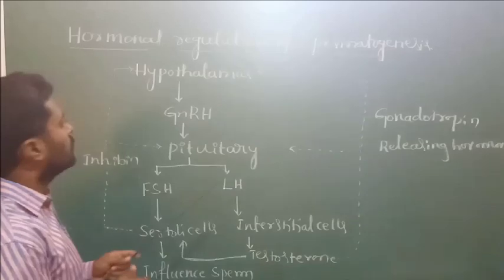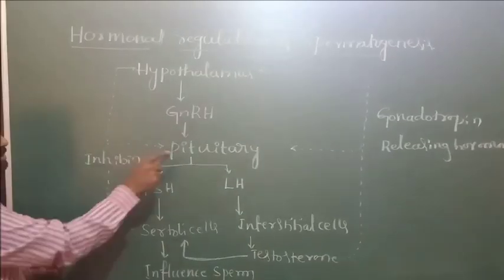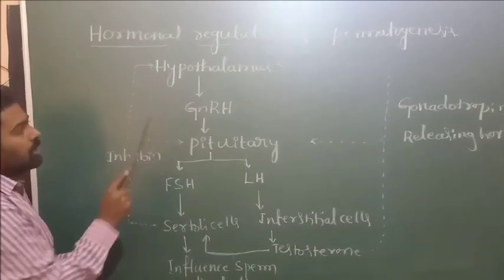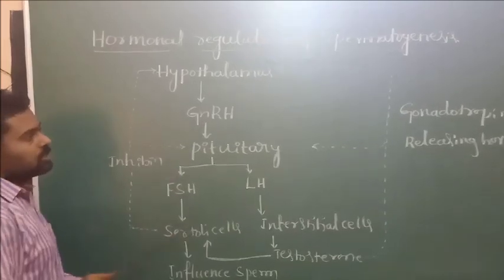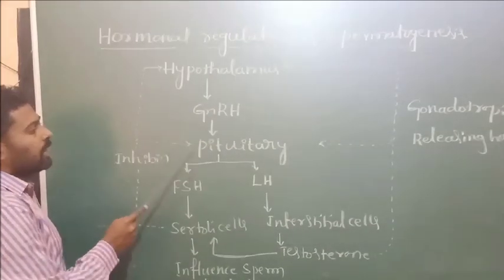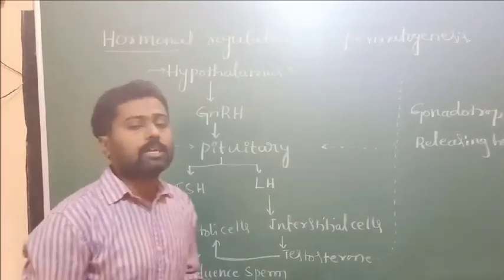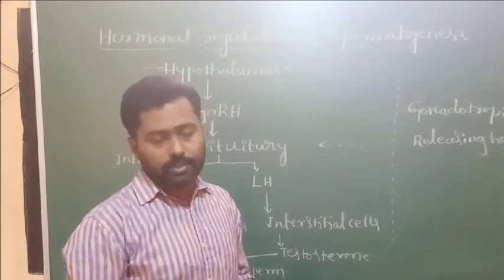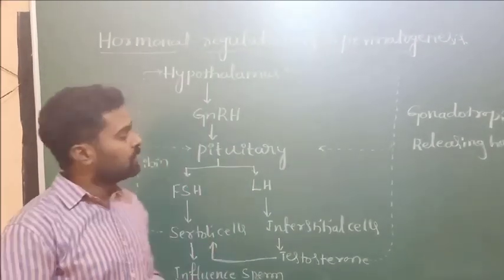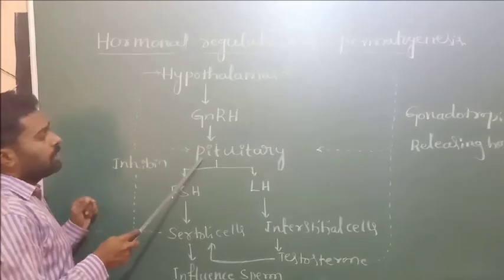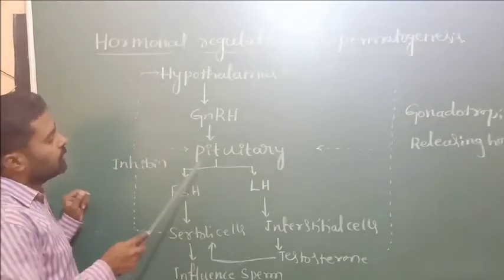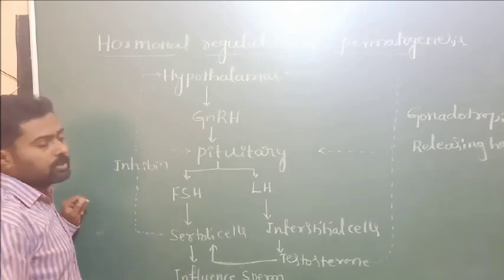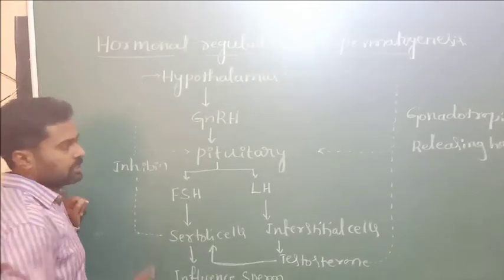In this schematic representation, the hypothalamus secretes gonadotropin releasing hormone (GnRH), which in turn stimulates the anterior pituitary gland. There are two lobes in the pituitary gland: one is adenohypophysis and another is neurohypophysis. The anterior pituitary gland secretes gonadotropins, mainly FSH and LH.